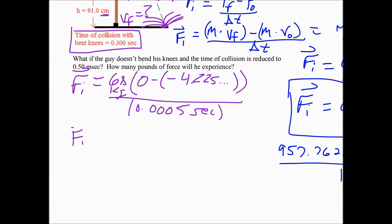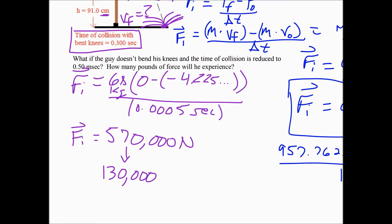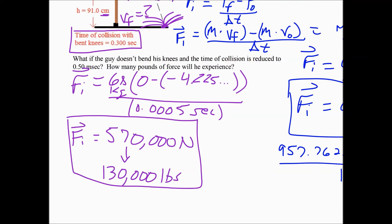Typing that into the calculator with two sig figs, I get 570,000 newtons of force. Converting to pounds, that's 130,000 pounds of force on the guy's legs. Something's going to break — nobody's legs are strong enough to withstand that much force, so as soon as he hits the ground with his legs locked, his bones are going to start shattering all the way up until all of that energy is exhausted.